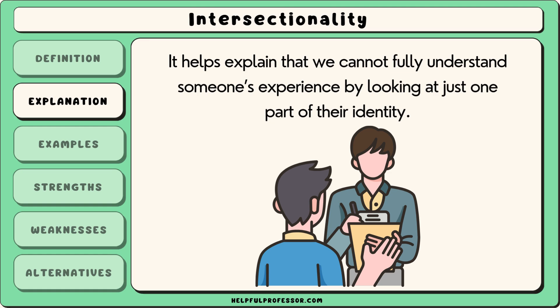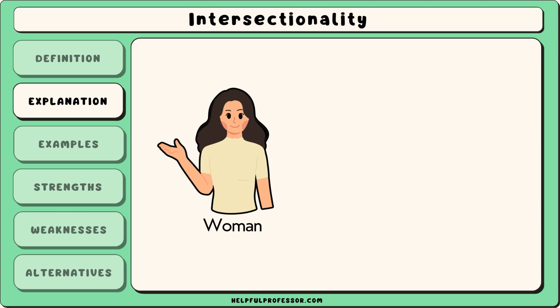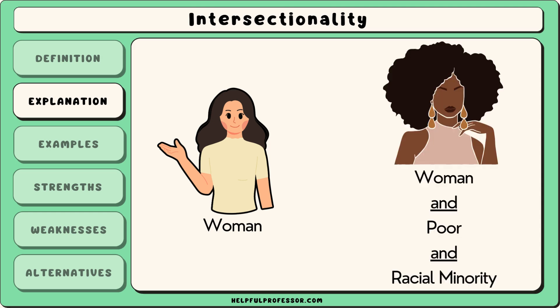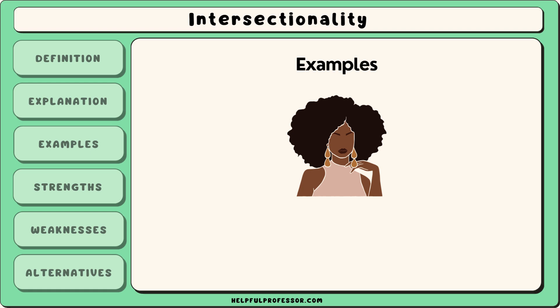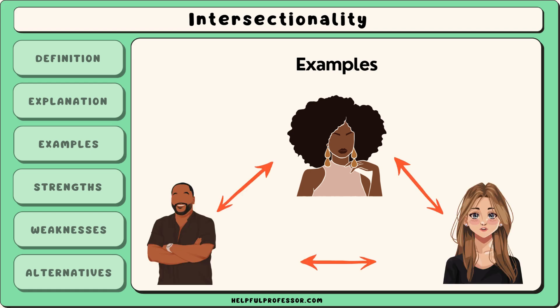For example, a law that protects women might not be as helpful for a poor woman of colour, because her experience is shaped by more than just gender. This theory was introduced by legal scholar Kimberlé Crenshaw in 1989 to highlight how people face overlapping systems of oppression such as racism, sexism, and classism.